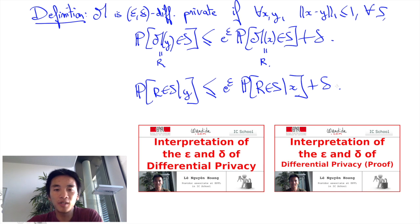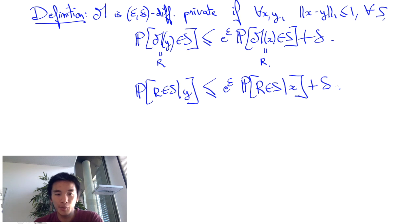Now, we have seen in previous videos how to interpret δ. Roughly, it corresponds to saying that the probability distribution of R given y should behave like some other random variable R' under some event of high probability 1 - δ, and that R' is ε-differentially private with respect to R given x. As a result, in this video, to simplify the analysis, we'll restrict ourselves to ε-differentially private mechanisms.